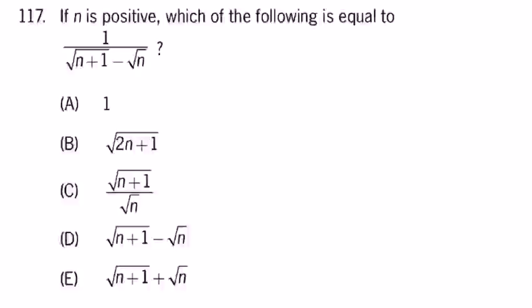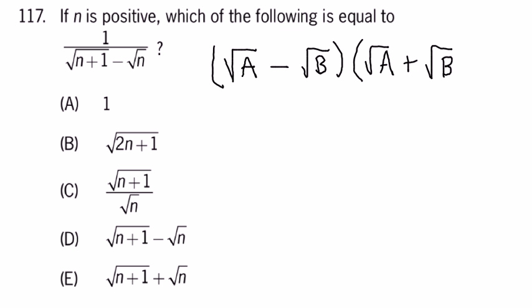The basic idea is that if I have the square root of A minus the square root of B, capital A and capital B can be anything, times the square root of A plus the square root of B.